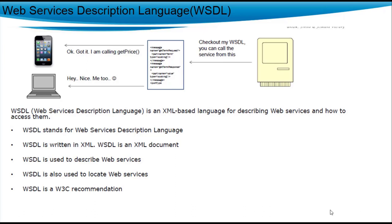The advertisement of a web service is a WSDL. It is an XML document used to describe the web service and how to access it. It is written in XML, used to describe the web service, and is a W3C recommendation. It contains three important things: the name of the web service, the input required, and the output generated, so the calling application knows what to send and what output to expect. Web services publish their WSDL with the name, input, and output so that developers can build their UI accordingly.